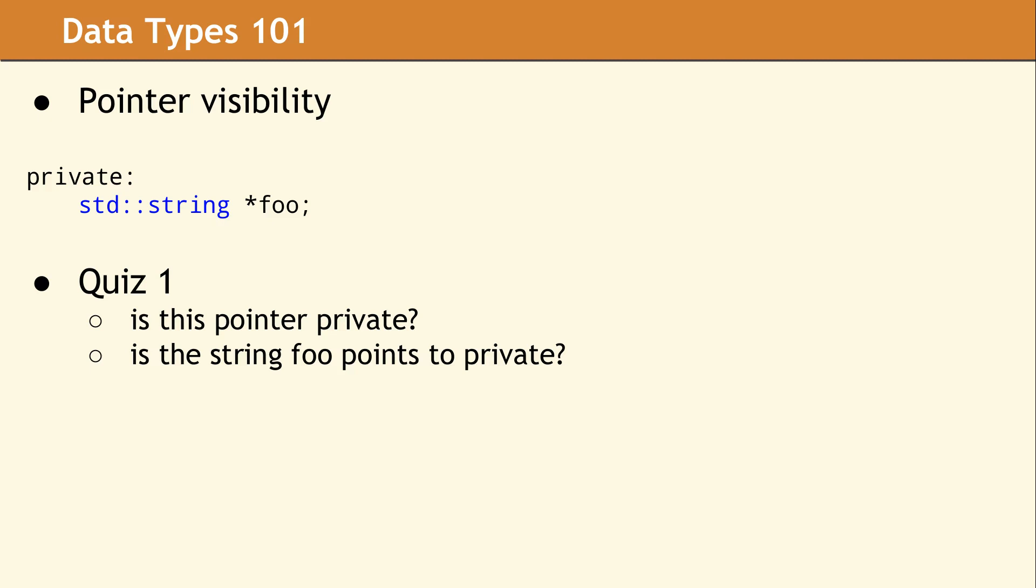Once we start working with pointers, we have another set of questions that come up. For example, assume that in the body of your class you declared a private data member that is a pointer to a string. And the question is, is this pointer private? And is the string that it points to private? And the answer is that yes, the pointer is certainly private because it is declared in a private portion of your class. However, based on this snippet of code, you have no way of determining whether the string that it points to is private to your class or shared by some other piece of code elsewhere in your program.